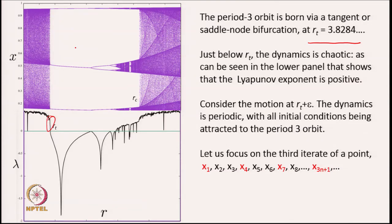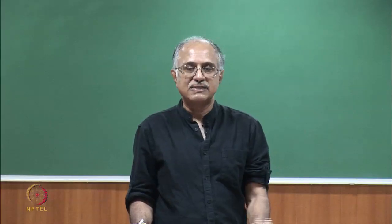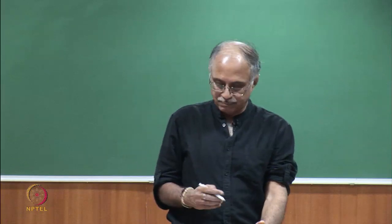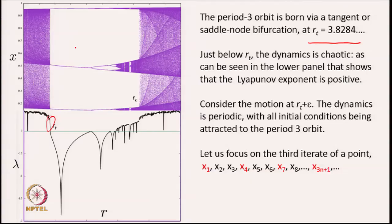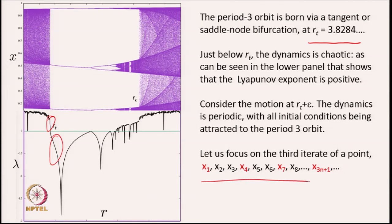The period-3 orbit is born through a tangency, so there is a stable periodic orbit of period-3 and an unstable periodic orbit of period-3, both born at the same time. The dynamics over here shows a periodic orbit to which almost all initial conditions are attracted. The period-3 orbit can be written as: x_1, x_2, x_3, x_4 = x_1, x_5 = x_2, x_6 = x_3, and so on.